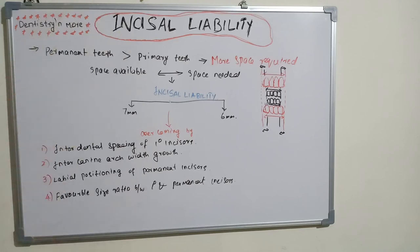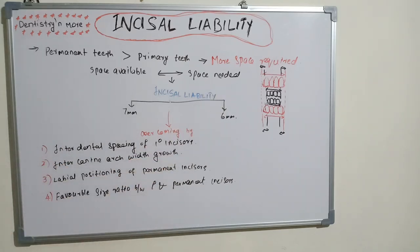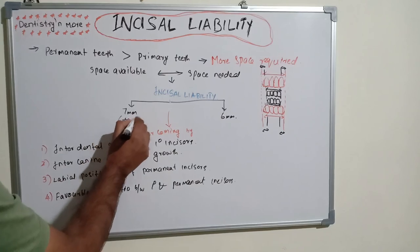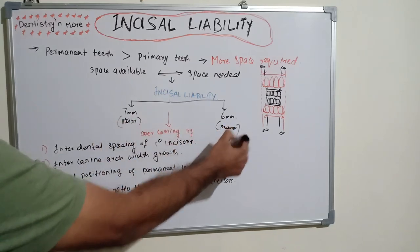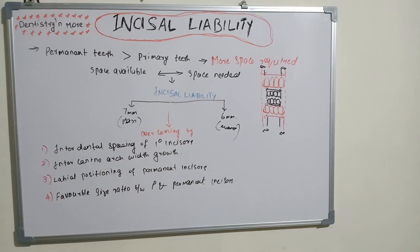In summary, incisor liability is the difference between space available and space needed for the anterior teeth. It is 7 millimeters in the maxilla and 6 millimeters in the mandible, and can be overcome by: interdental spacing of primary incisors, intercanine arch width growth, labial positioning of permanent incisors, and favorable size ratio. Thank you, see you in the next session of dentistry and more.